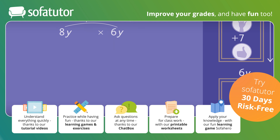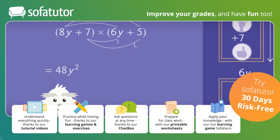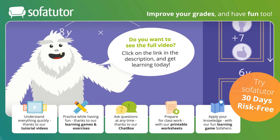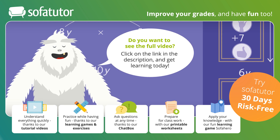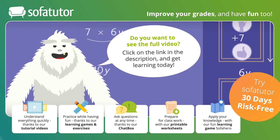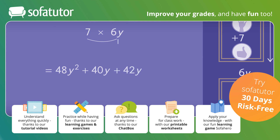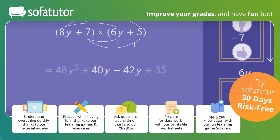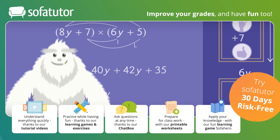First: 8y times 6y equals 48y squared. Outer: 8y times 5 equals 40y. Inner: 7 times 6y equals 42y. And last: 7 times 5 equals 35. Combine the like terms and rewrite the terms in standard form, listing exponents in order from greatest to least: 48y squared plus 82y plus 35.